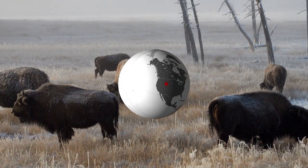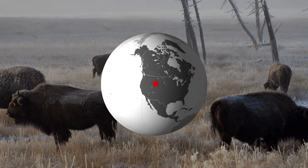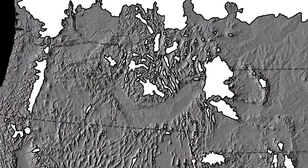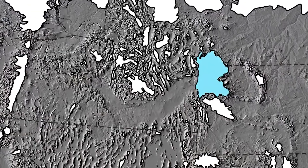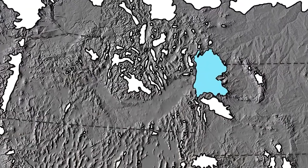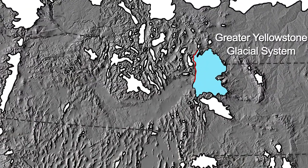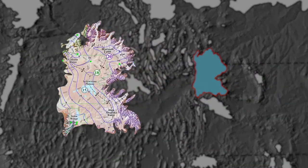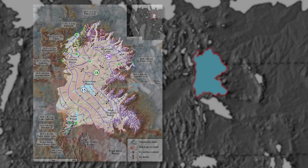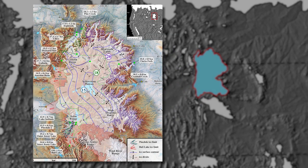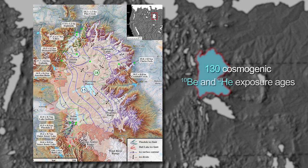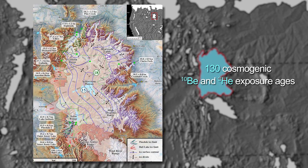During the Pleistocene Ice Ages, Yellowstone was buried beneath ice that covered 20,000 square kilometers and reached a thickness of 1 kilometer. To examine the evolution of this complex, we review the history and dynamics of the Yellowstone Glacial System during the last two glaciations, using geologic mapping and over 130 cosmogenic exposure ages.